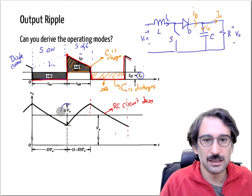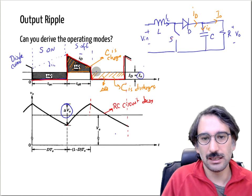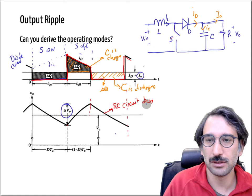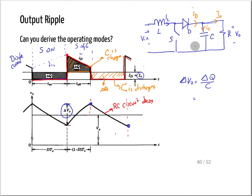What we are trying to calculate is the amount of voltage variation, delta V. We can use either of the delta Q regions — let's use the discharging region to calculate our ripple. The ripple in output voltage equals delta Q divided by C, by definition. The charge drawn during discharging equals the output current times the switch-on time, D·Ts.